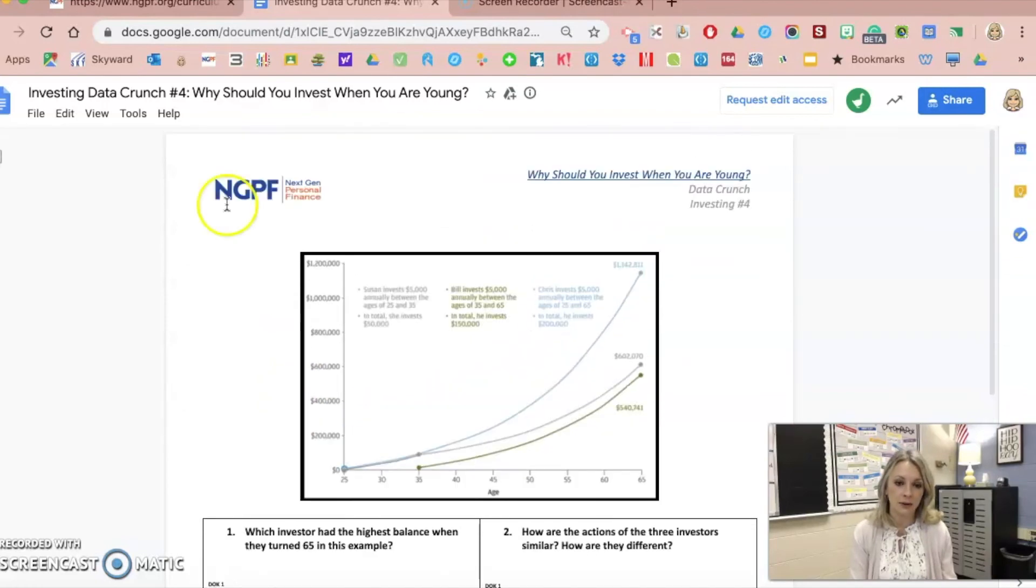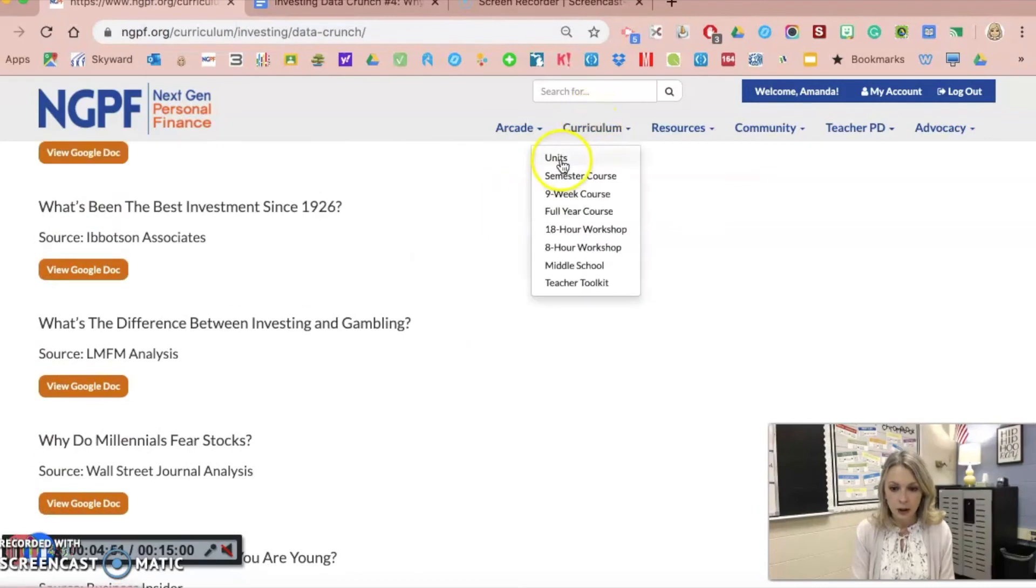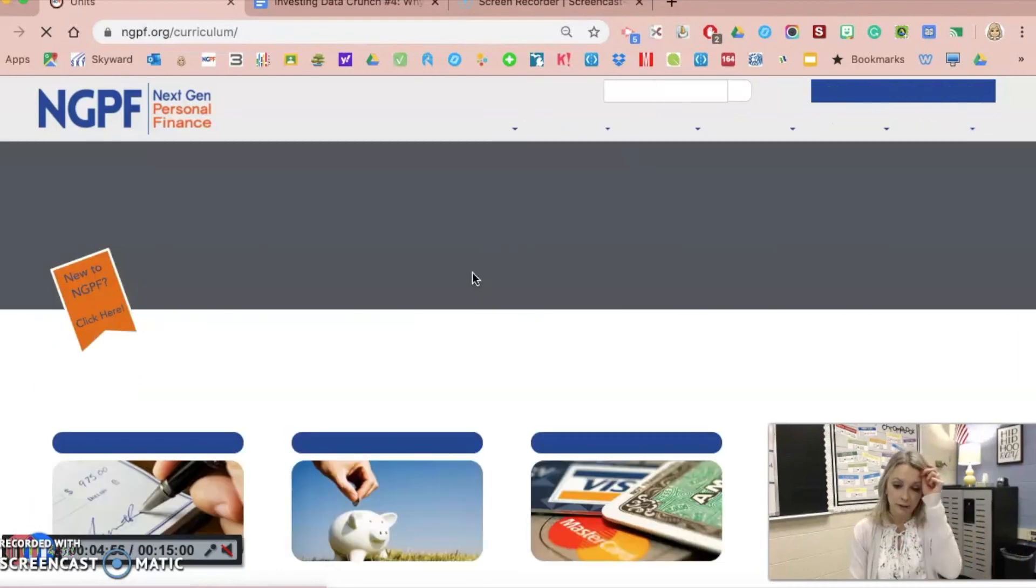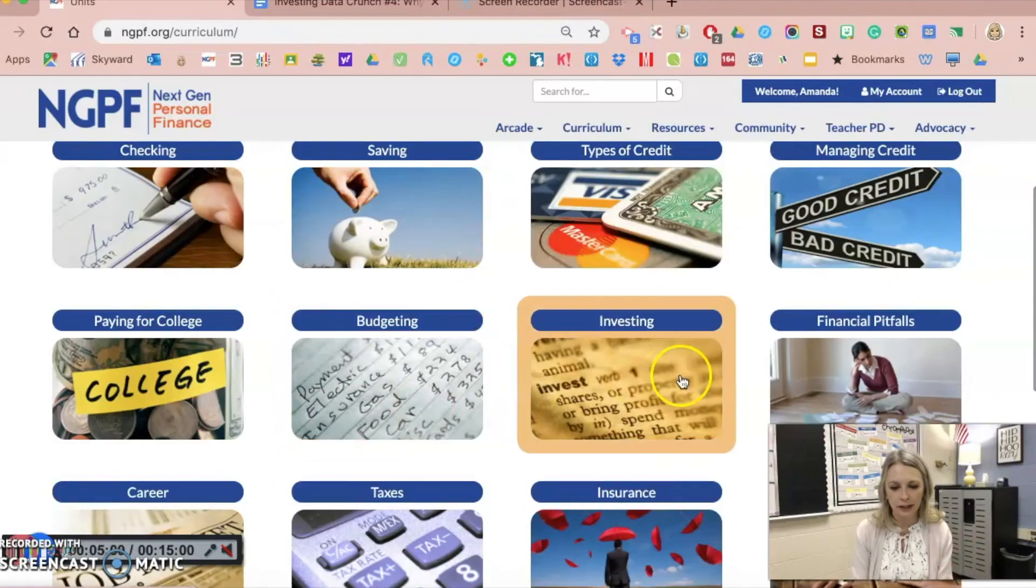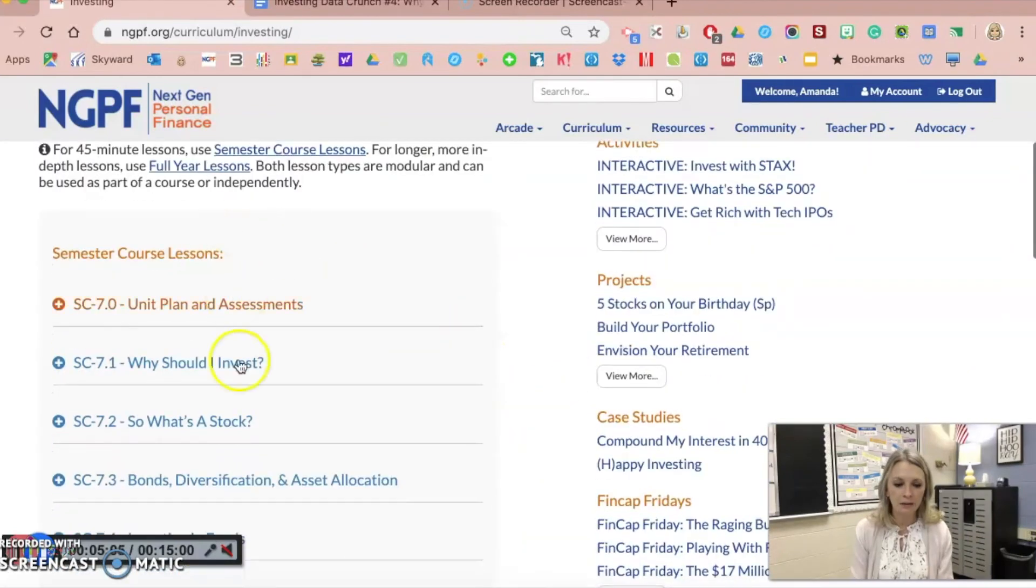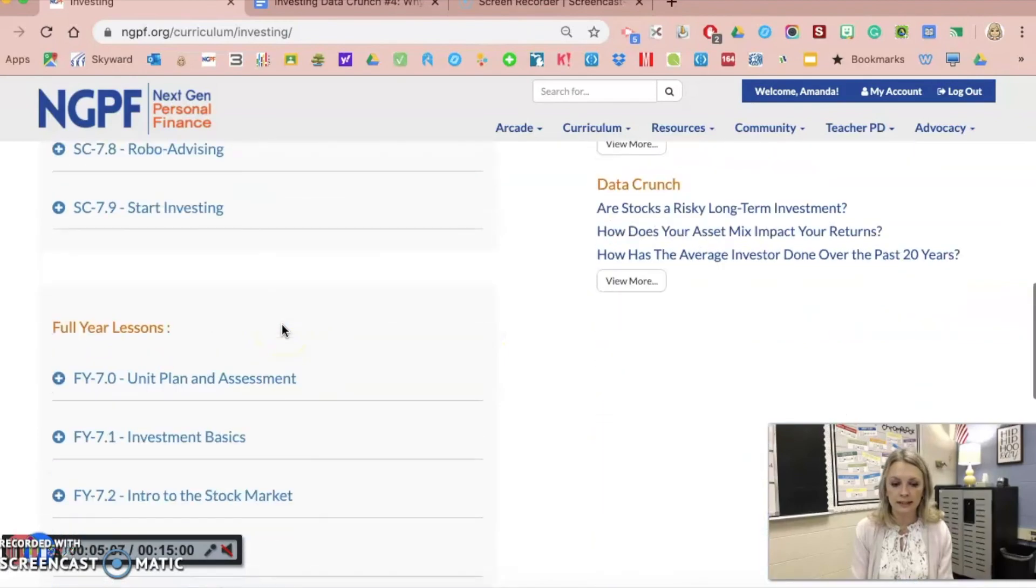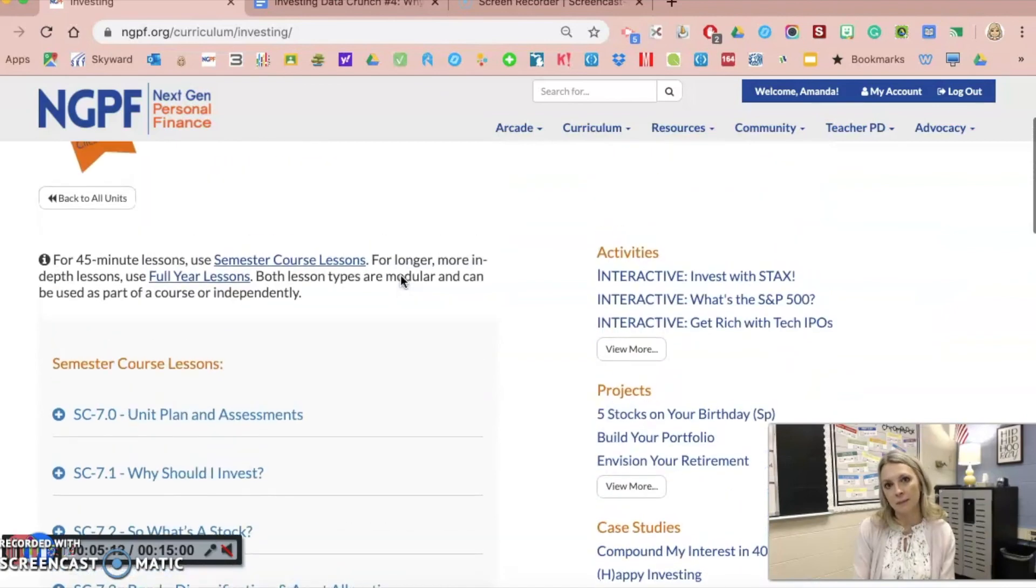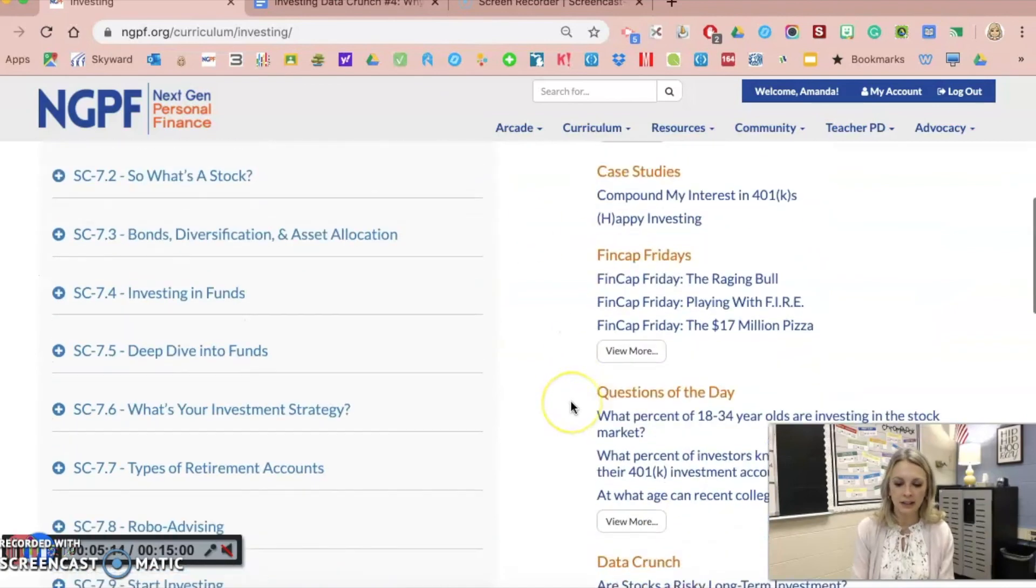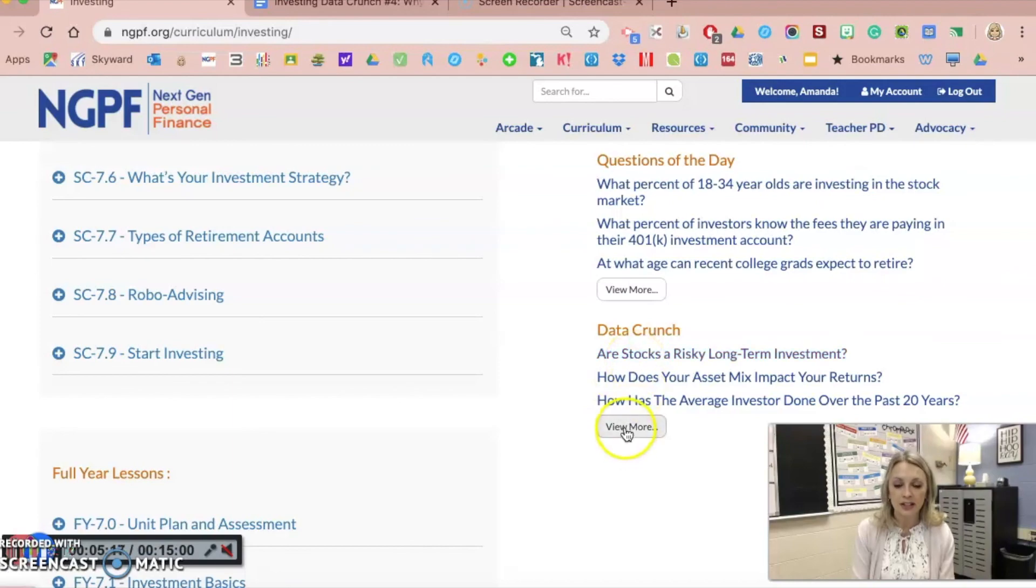I can also tell you that on the NGPF website, if you go to their units page and look at the materials that they have for every single unit, that's most often how I find what I want in the NGPF curriculum. If I go to investing, I have the semester course outline in lessons, the full course lessons, and you notice they have à la carte options on the right-hand side: activities, projects, case studies, and you can also find the data crunches there. I can see them here along with everything else.